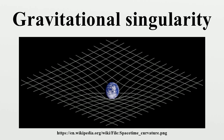Extrapolating backward to this hypothetical time zero results in a universe with all spatial dimensions of size zero, infinite density, infinite temperature, and infinite space-time curvature. Conical: A conical singularity occurs when there is a point where the limit of every diffeomorphism invariant quantity is finite, in which case space-time is not smooth at the point of the limit itself. Thus space-time looks like a cone around this point, where the singularity is located at the tip of the cone. The metric can be finite everywhere if a suitable coordinate system is used.